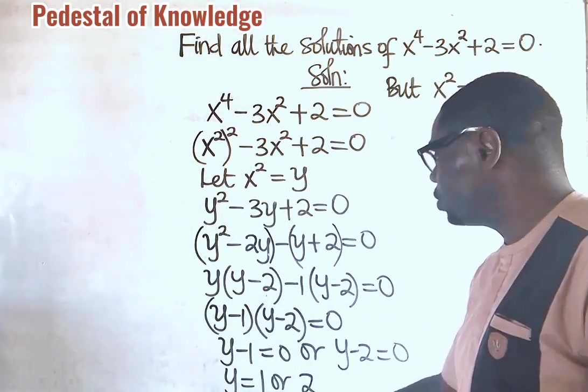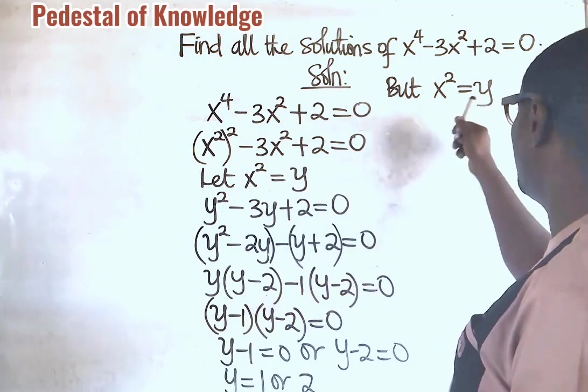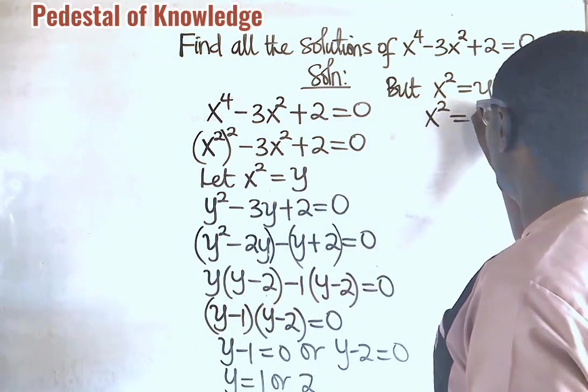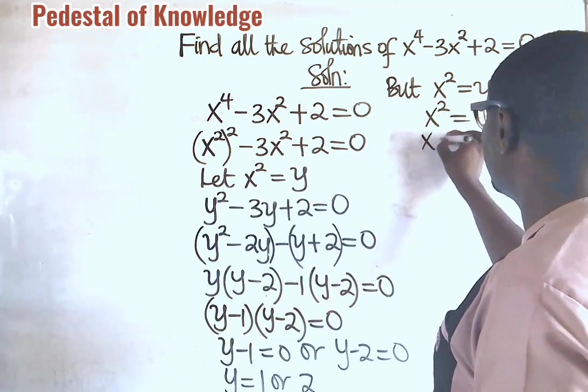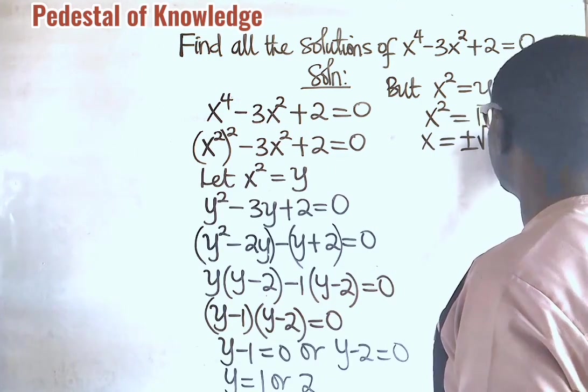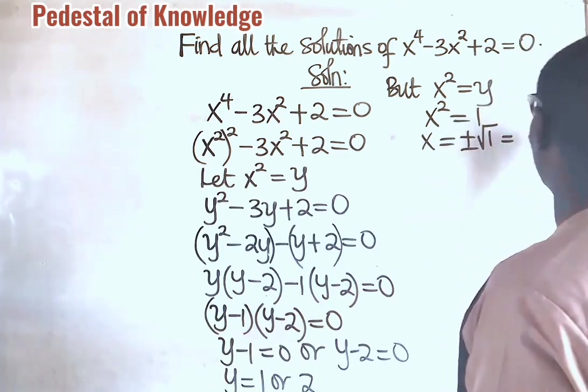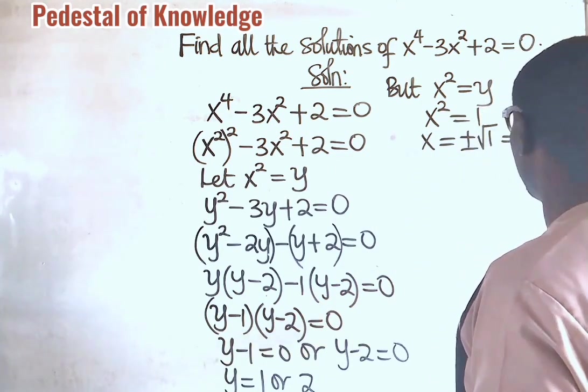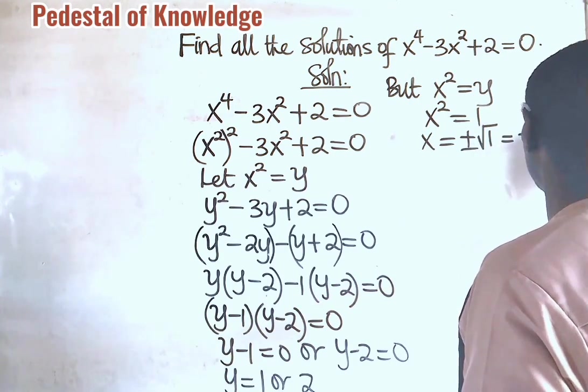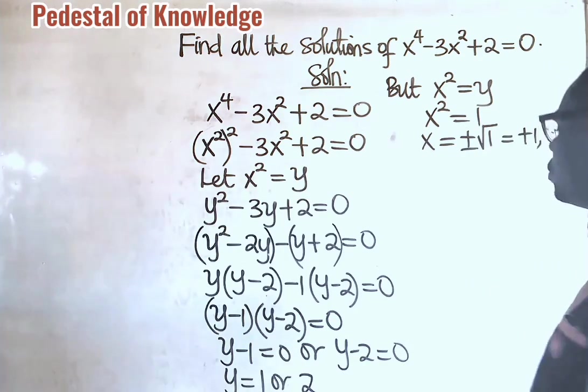When y is equal to 1, we go back here. When y is 1, so, we have x squared is equal to 1. So, from here, x is equal to plus or minus the square root of 1, which is equal to, because the square root of 1 is 1, we are going to have plus 1 or minus 1.